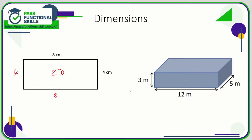On the right hand side we have a three-dimensional shape, and this is a cuboid. Sometimes when 3D shapes are drawn you have these dotted lines just to give it more of a 3D feel. It's a 3D shape because it has three dimensions: it has length, it has width, and it also has height. From these three dimensions on a cuboid we can work out the volume by multiplying them together. We can also work out the surface area, which would be the area of the rectangular front and back, plus the rectangular sides and the rectangular top and base, all added together.